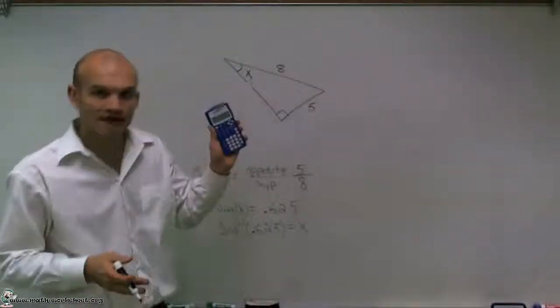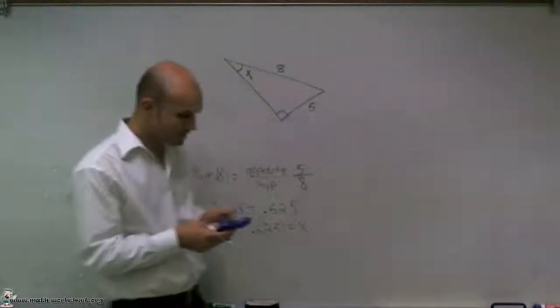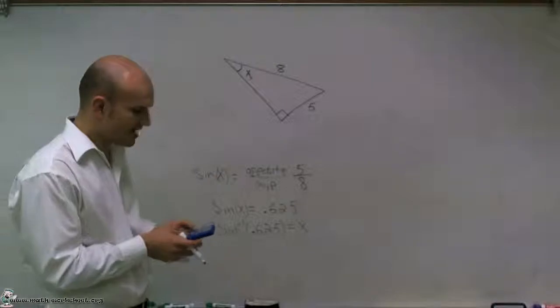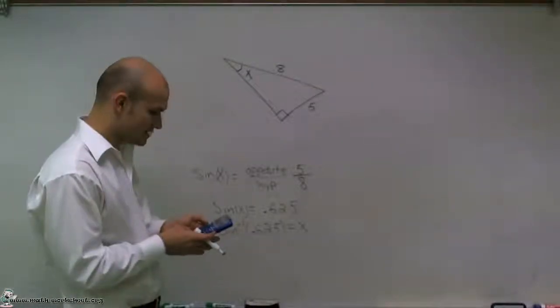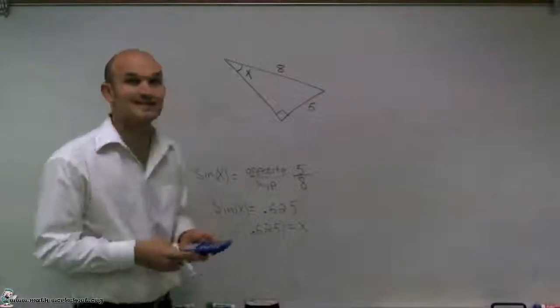So what I'll do is I'll take a graphing or a scientific calculator, make sure it's in degree mode, and I'll take inverse sine of 0.625.